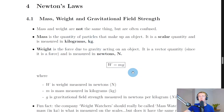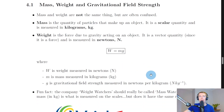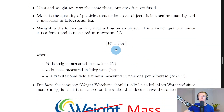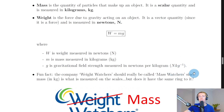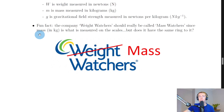Mass and weight are linked by an equation which also includes gravitational field strength. The equation is W = mg, where W is weight measured in Newtons, m is mass measured in kilograms, and g is gravitational field strength measured in Newtons per kilogram — written as N kg⁻¹ or N/kg.